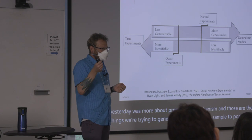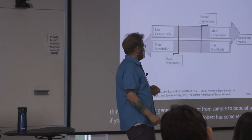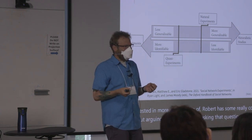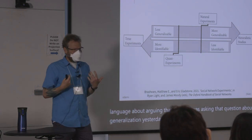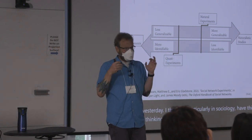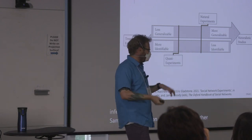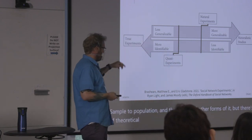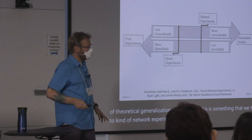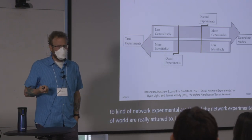Russ Bernard has cool language about this — that particularly in sociology, we have this terrible habit of thinking of generalization as only a statistical inference from sample to population, but there are lots of other forms of it. I teach a lot about theoretical generalization, which I think those in the network experimental world are really attuned to. I say 'they' because I don't really do experiments.